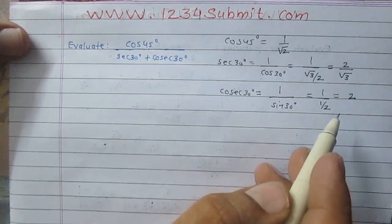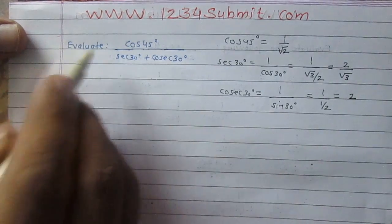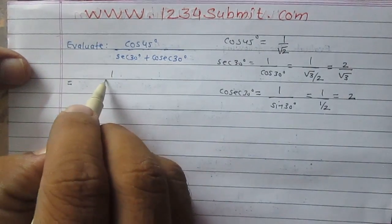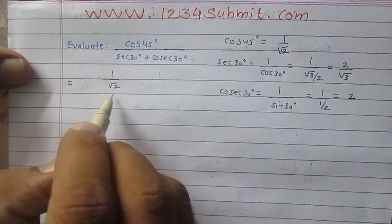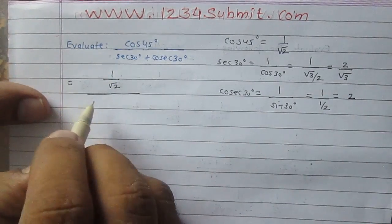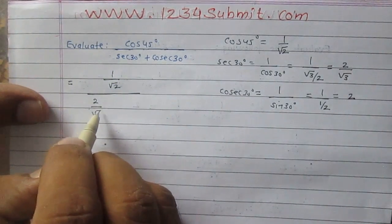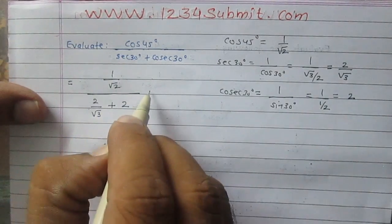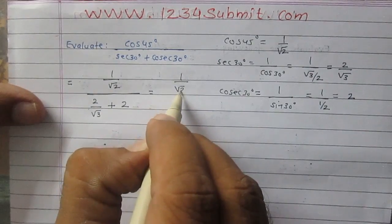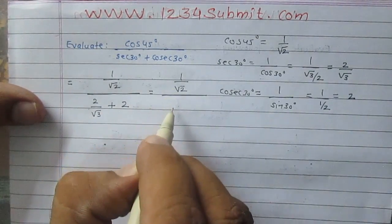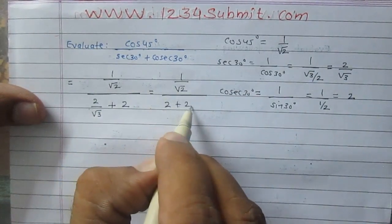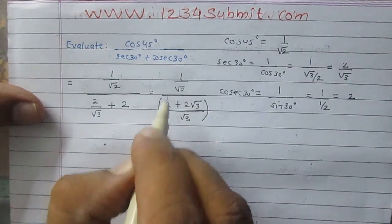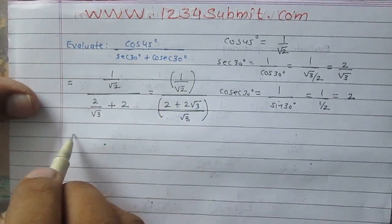After substituting these values, we get the expression as 1 upon square root 2 in the numerator, as cos 45°. Sec 30° is 2 upon square root 3, and cosec 30° is 2. This can be simplified further as 1 upon square root 2 in the numerator, and 2 plus 2 root 3 upon square root 3 in the denominator.